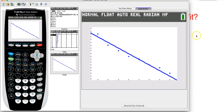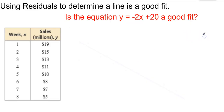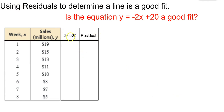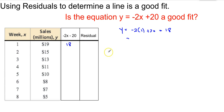Based on what you see, would you think it's a good fit? Yeah, it looks pretty good. So now when we do our residuals — if we look at the equation negative 2x plus 20 and substitute in the x values, for the first one we have y equals negative 2 times 1 plus 20, which gives us 18. So on the scatter plot, x = 1 has a y value of 19, but on the model it has a value of 18.